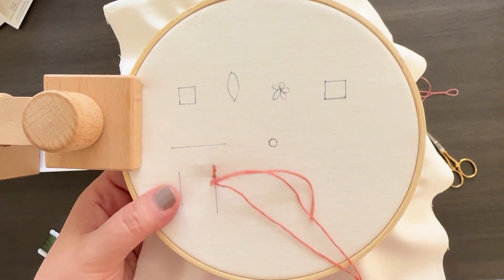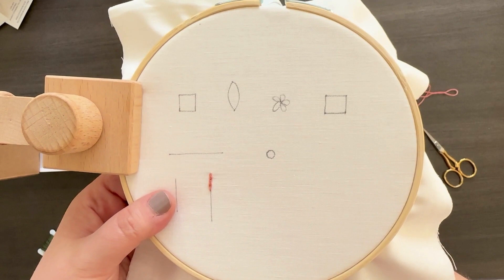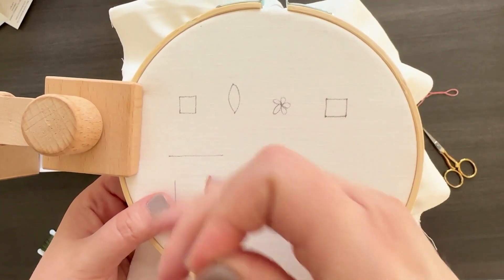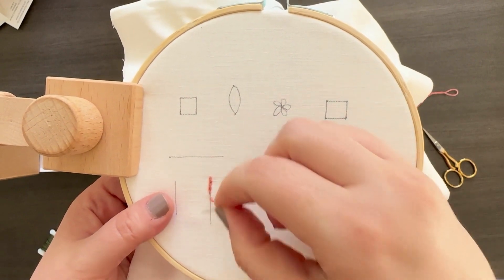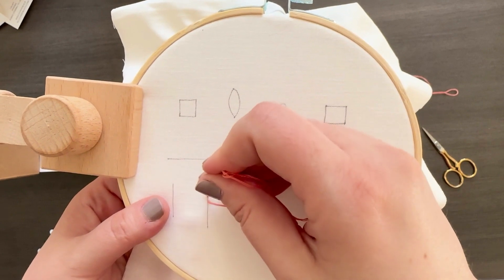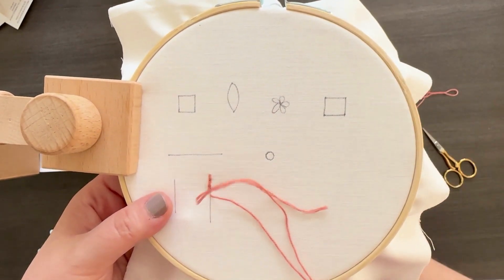The split backstitch is also really forgiving, which is probably why it's one of my favorites for lettering. I don't prefer just regular backstitch for lettering because it just seems like it always looks a little bit messy and I prefer the cleaner look of the split backstitch a little bit more.